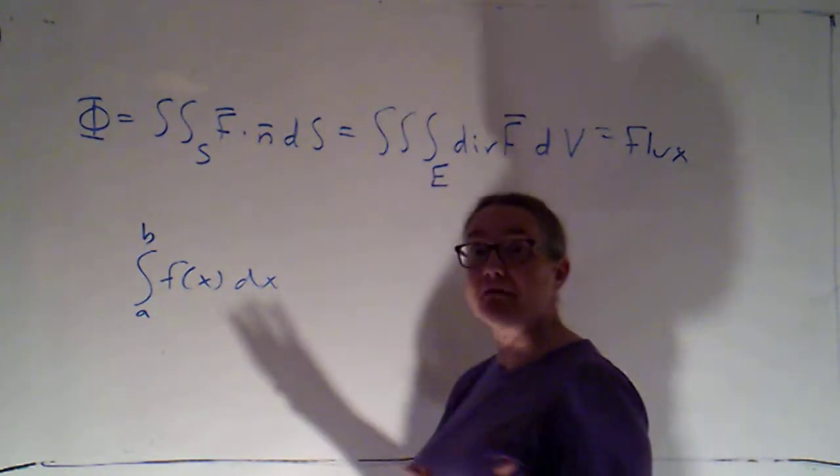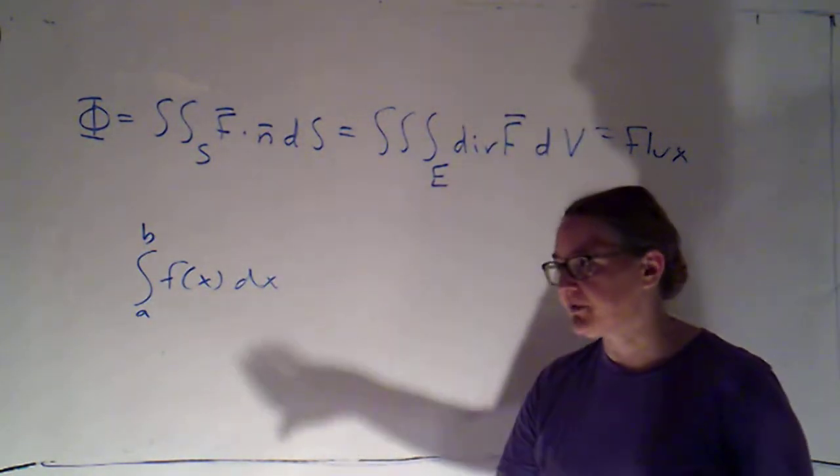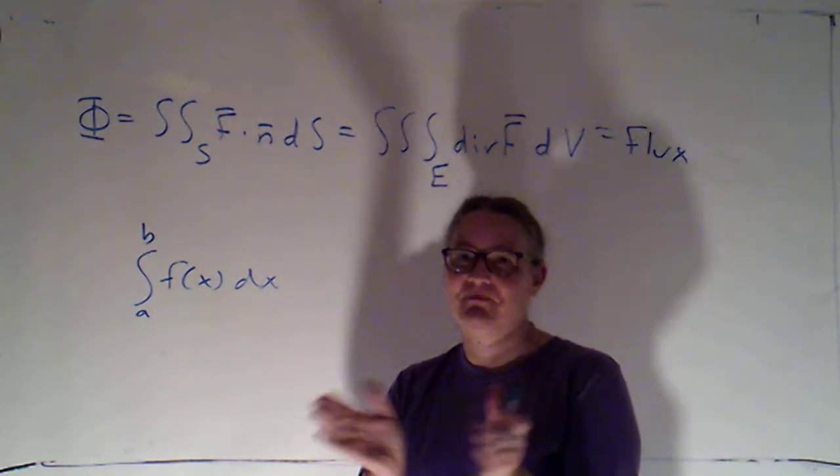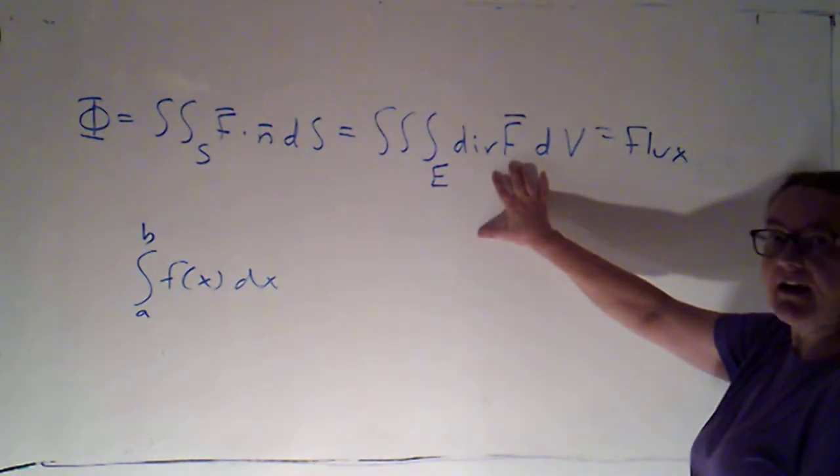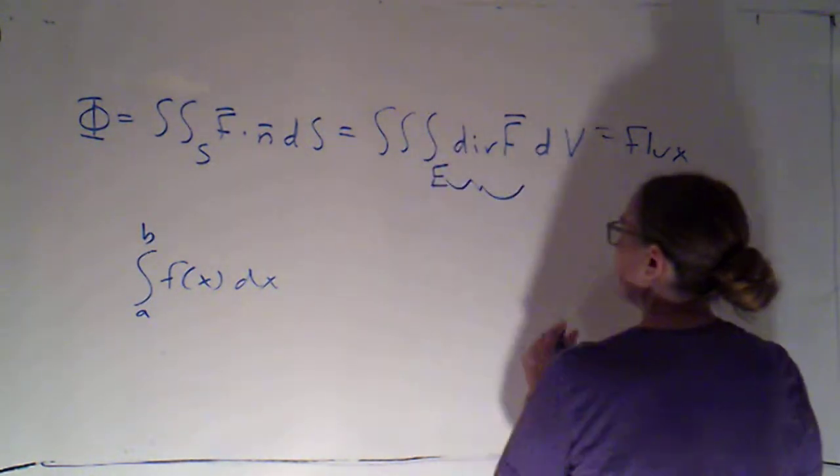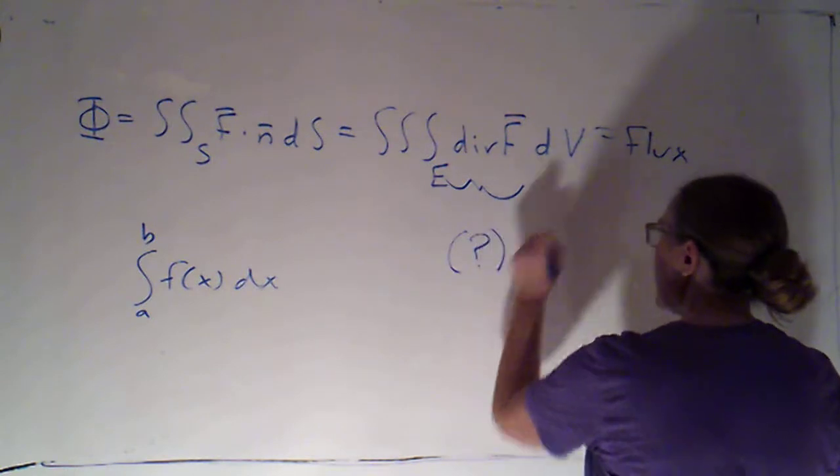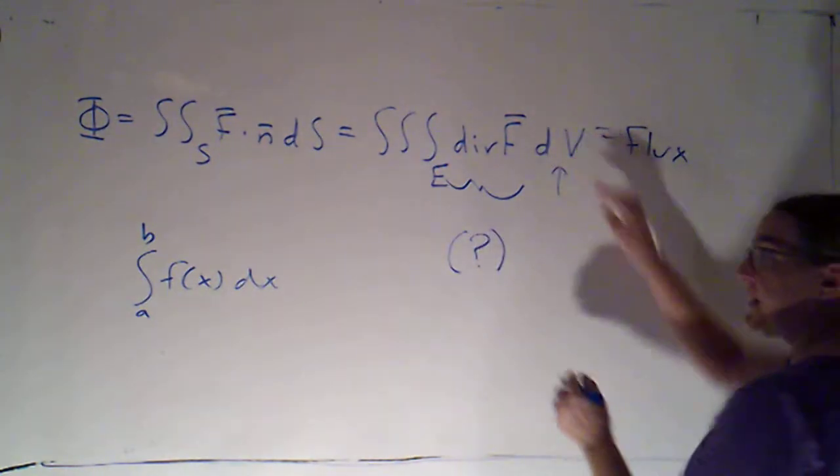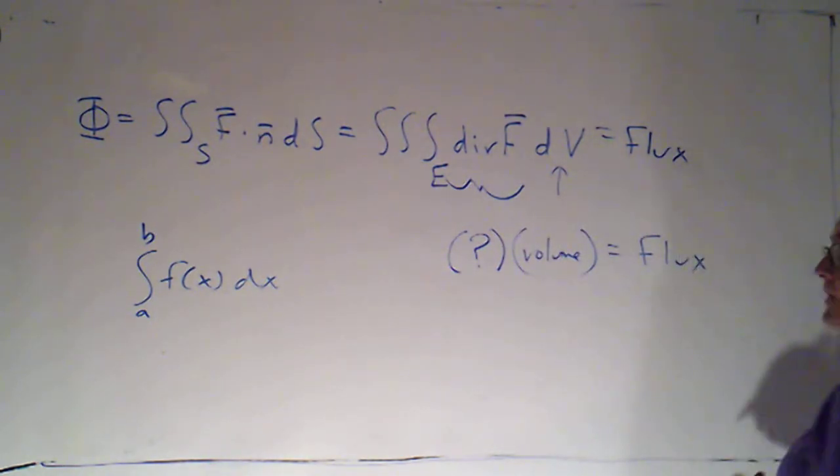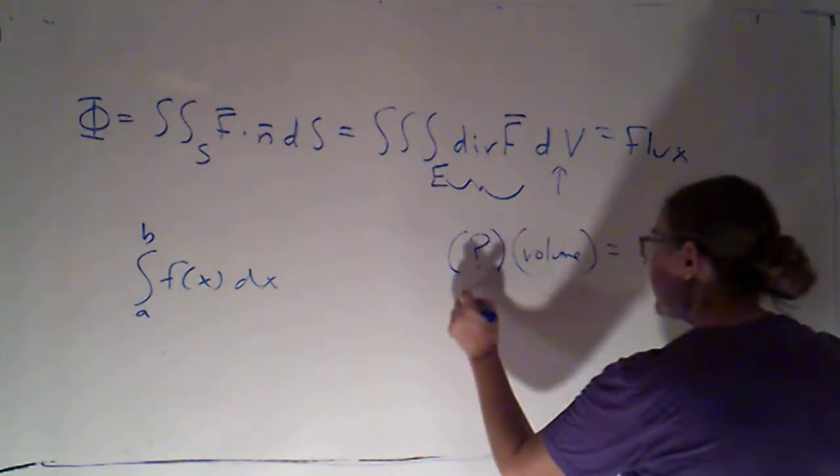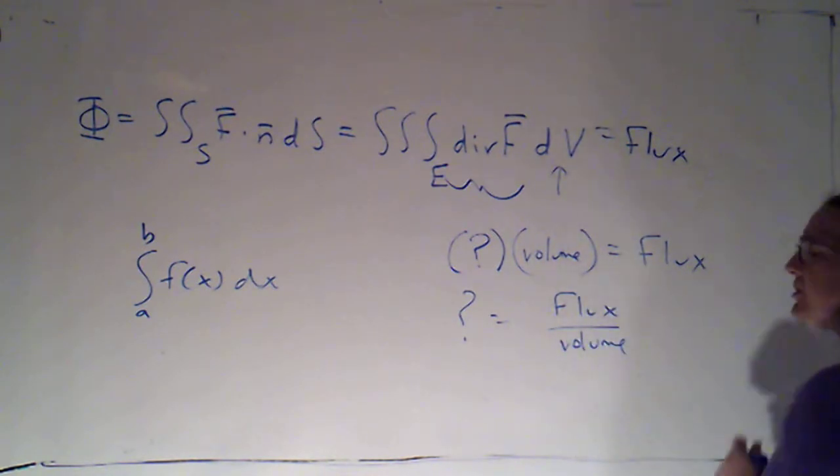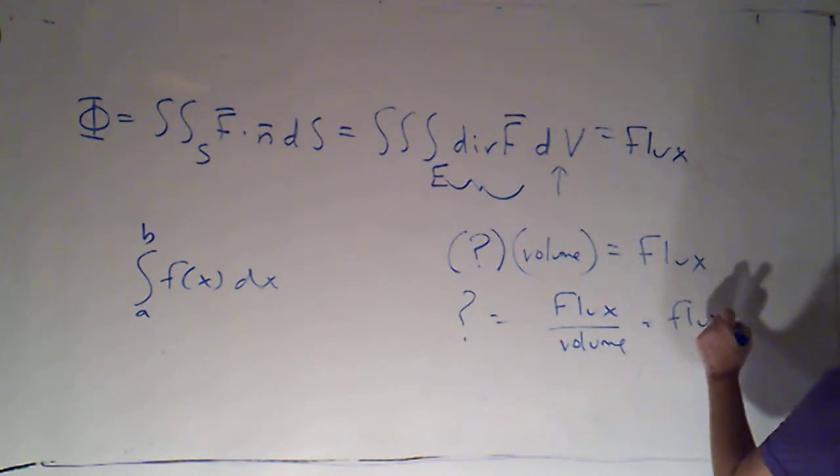And very often, of course, that area is just a metaphor for something like displacement or work or something else, where again, if I had two constant quantities, I would just multiply them. So anytime I want to understand what an integrand means, I can say, well, if it were constant, then whatever it means, I would multiply it by what's represented by this, which is the volume to get flux. So whatever the divergence means, it should be flux divided by volume, which would just be flux density.